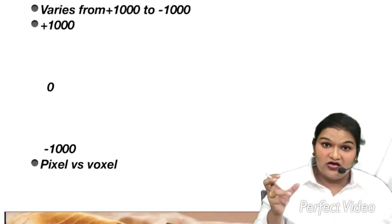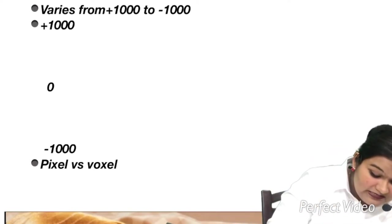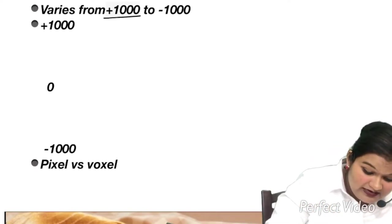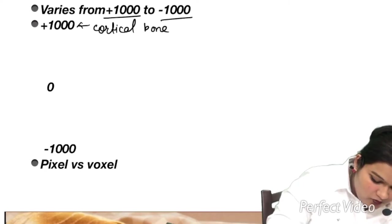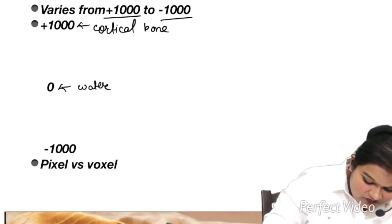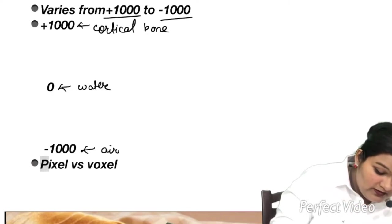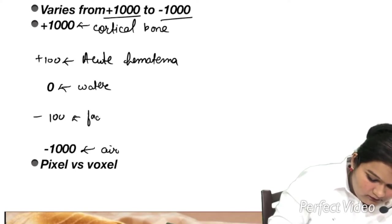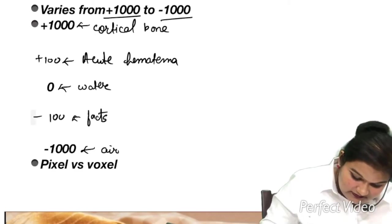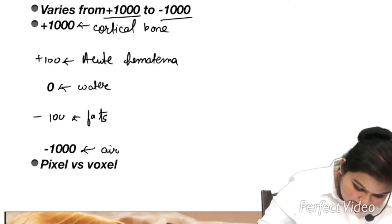The value of Hounsfield unit varies from plus 1000 to minus 1000. This plus 1000 is for cortical bone. This 0 is for water and this minus 1000 is for air. Somewhere in the middle we have plus 100 and this plus 100 is for acute hematoma. And here minus 100 is for fats.